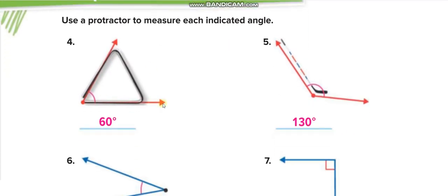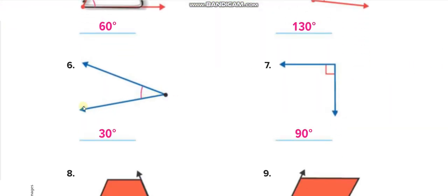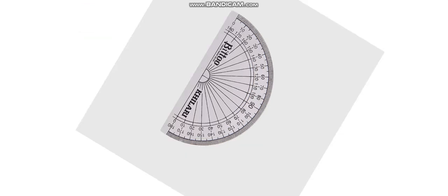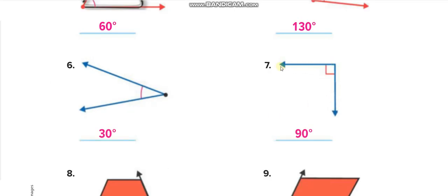This one is very simple — put the protractor and check: it is 60 degrees, and another is 130 degrees. For this angle going in the other direction, use the left-sided zero, put this line on zero, and it shows 30 degrees. For the next question, position the protractor this way and use the zero on this side — the measurement down is 90 degrees.